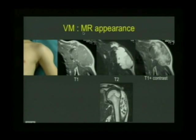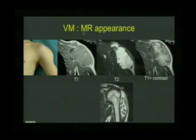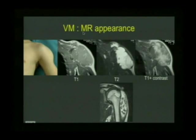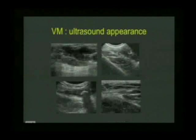A phlebolith is a calcified blood clot. They can be numerous throughout these malformations. Clinically, you can sometimes feel them under the skin — they feel like a little peanut. The areas of white on the high signal on T1 are some fat interdigitated throughout the lobulated surface of the venous malformation. MRI is extremely useful and very tissue-specific.